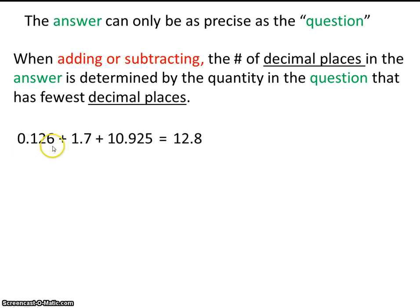And this number here is precise to the thousandths place. Remember this is the ones place, the tenths place, the hundredths place, and the thousandths place. This number is precise to the thousandths place. This number is precise to the tenths place, and this number is precise to the thousandths place. So the fact that this number is precise to the tenths place, this number limits us to an answer that's precise to the tenths place.